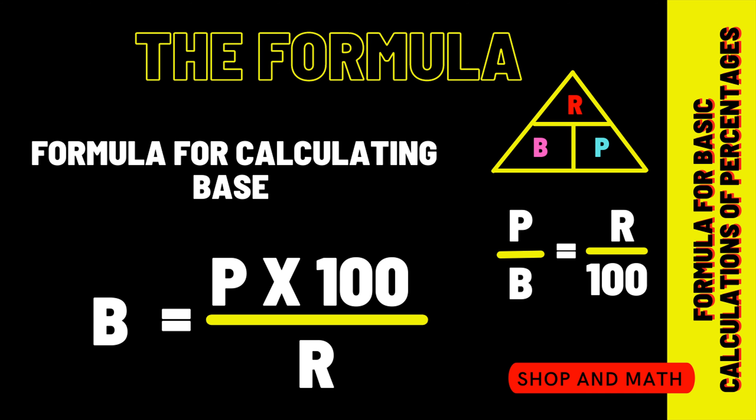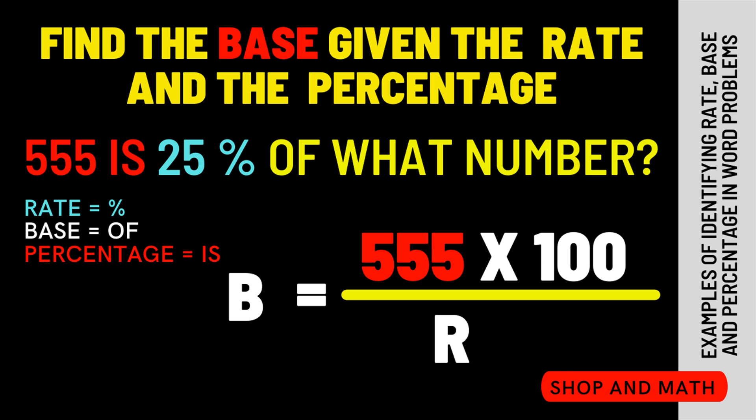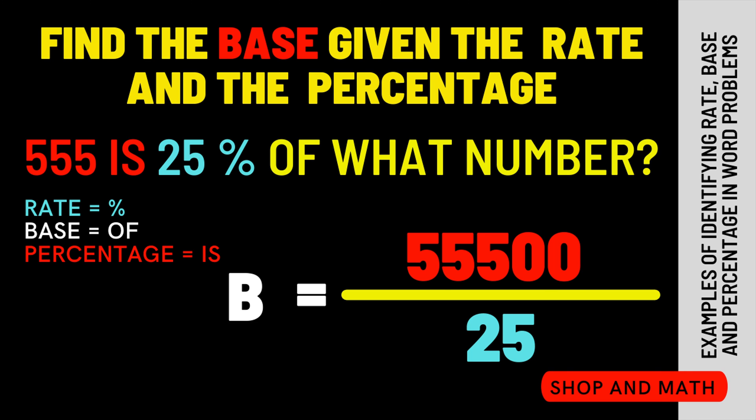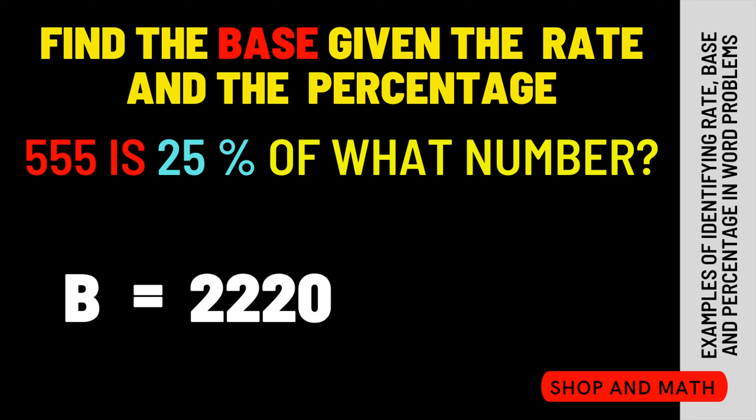This is the formula that we're going to use to calculate the base. It's substitution time. Let's swap out our percentage first. So 55 is our percentage. The rate is 25. 550 times 100 is going to be 55,500 divided by 25 is going to be 2,220.